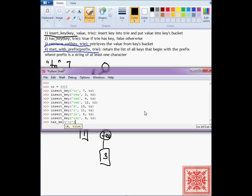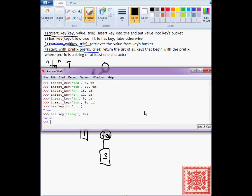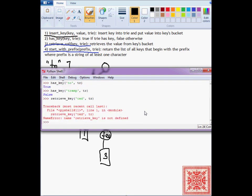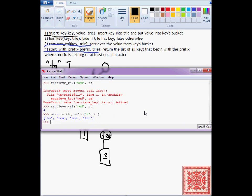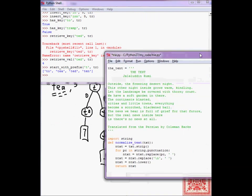Now we can check has_key to. Trie true. Has_key tramp returns false, as expected. Retrieve key to. It should be retrieve value of a given key. Ted. So 4. So far so good. And we can also test the implementation of start_with_prefix. So give all the strings, the list of strings from this Trie that begin with T. Yep, this is good. To, te, ted, and ten. Alright.